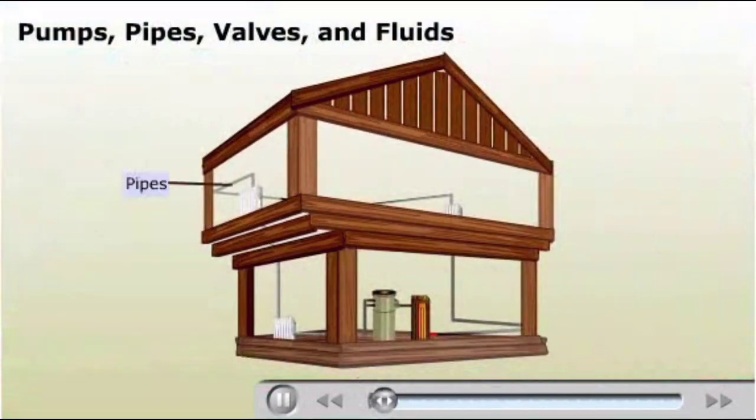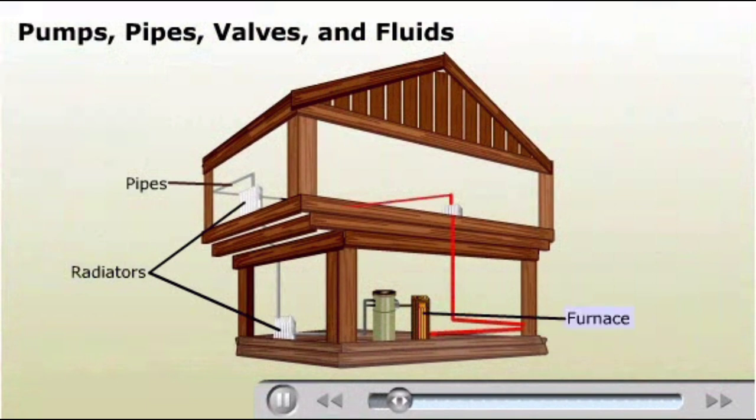The system of pipes in this house carries a fluid, hot water, that heats the house through a series of radiators. The water is heated in a furnace, but it cannot move far under its own power. A powerful pump is used to move the water around the house.